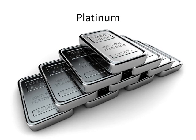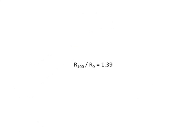This is done by measuring the resistance of the platinum at 100 degrees centigrade and the resistance of same platinum at 0 degrees centigrade. For pure platinum, the ratio of these two resistance values would be 1.39.